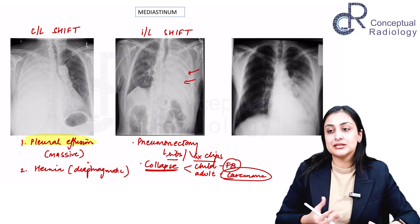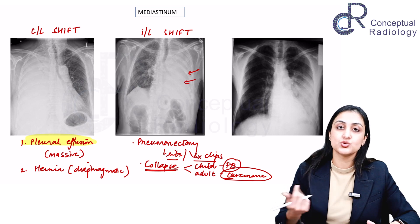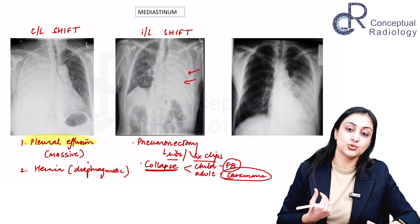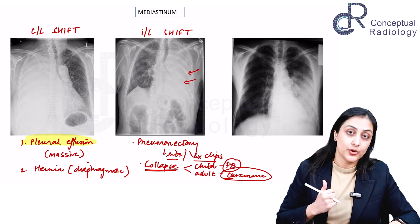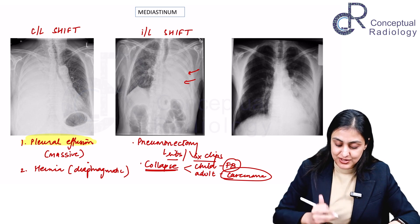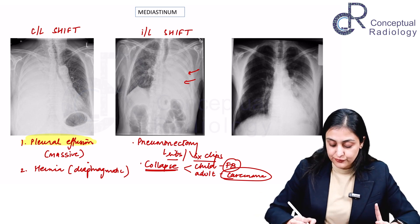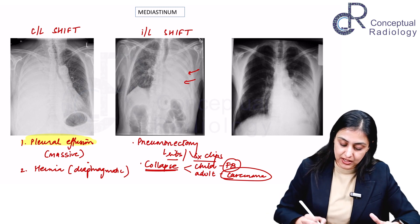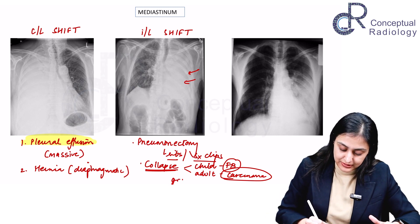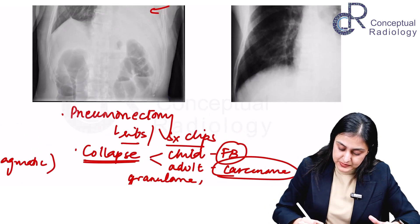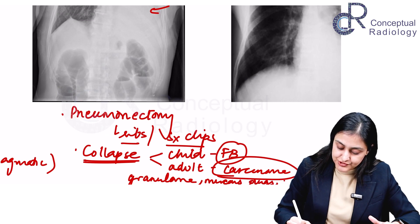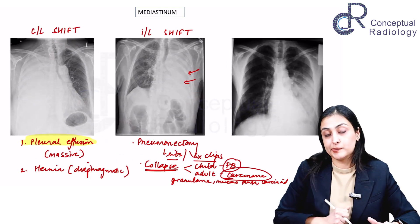Other differentials for bronchial obstruction causing total collapse include a granuloma, a mucus plug, and a carcinoid tumor — a typical carcinoid may sit inside the bronchus causing complete collapse. Foreign body and carcinoma remain the most common causes, with granuloma, mucus plug, and carcinoid as additional differentials to consider.